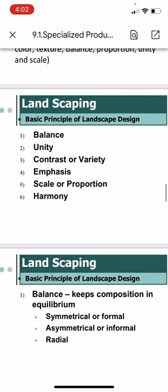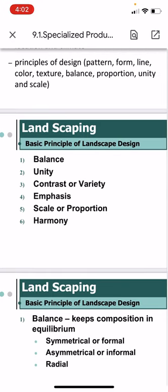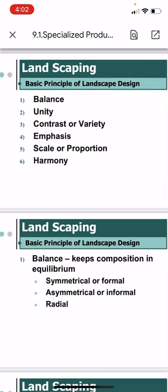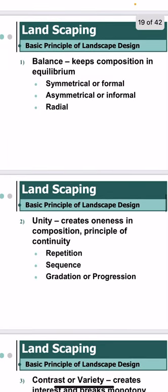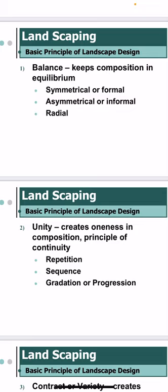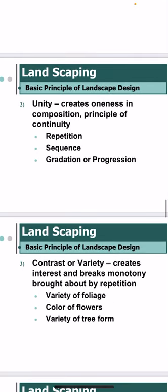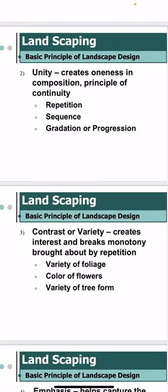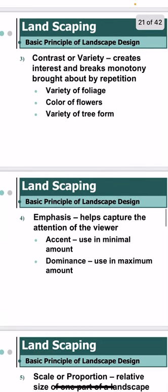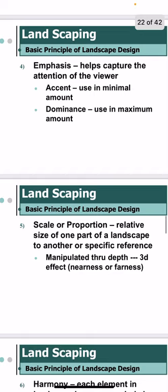The basic principles of design are: balance, which keeps composition in equilibrium and can be symmetrical or formal, asymmetrical or informal, or radial; unity, where every ornamental component creates oneness in composition applying principles of continuity such as repetition, sequence, gradation, or progression; and contrast or variety, which creates interest and breaks monotony brought about by repetition, including variety of foliage, color of flowers, and variety of tree form.